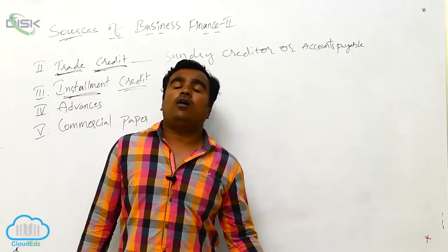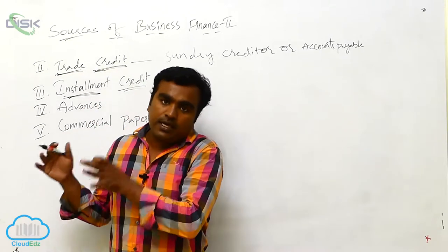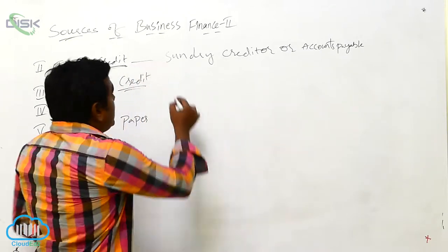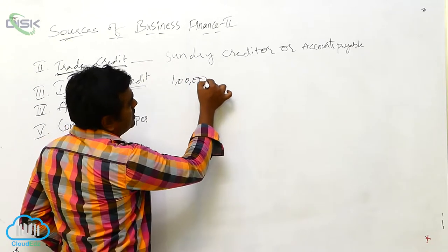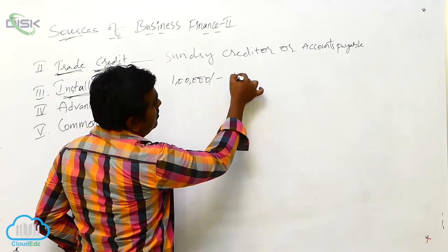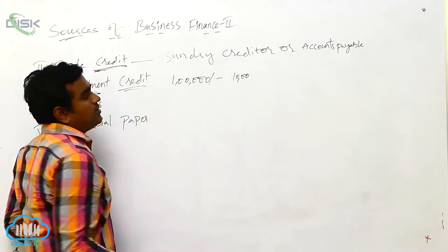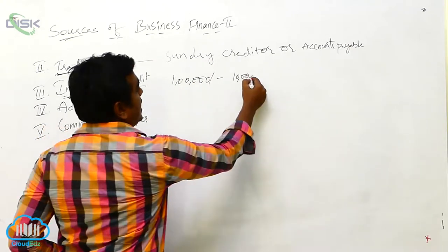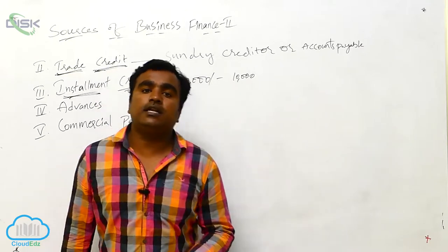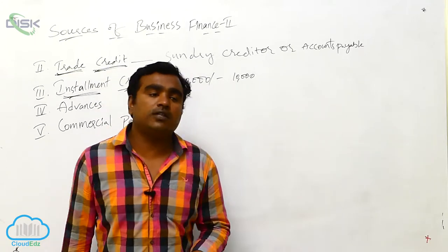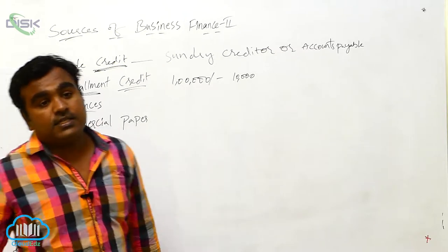For example, if I purchase goods for 1 lakh rupees and I paid 10,000 as the first installment, then on the remaining 90,000, interest will be charged. That is what installment credit is.